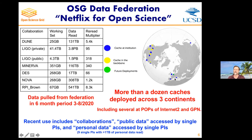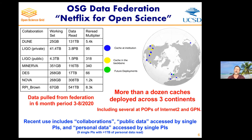What you'll recognize here is a globe — the dots are where we have caches in our federation. We are essentially a Netflix for open science, or as someone said, a YouTube for open science, because you provide the data and the content. You're not just a consumer of content — you're also a provider. We allow you to join this with your data and provide an origin to the federation.